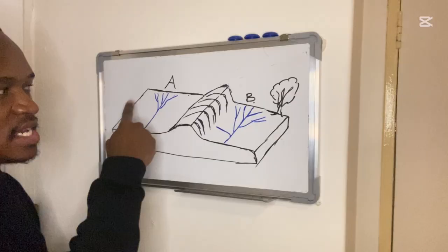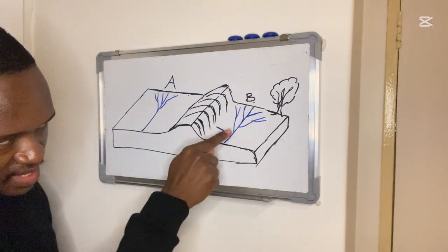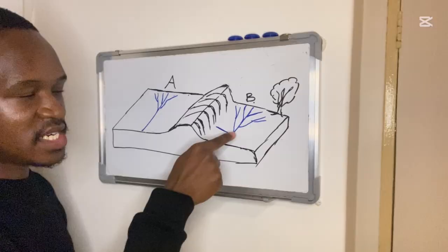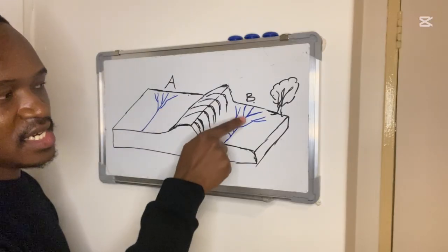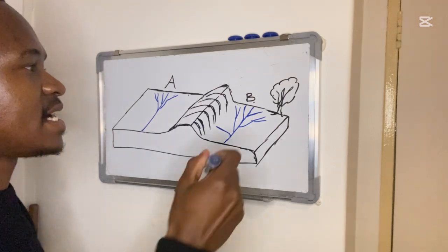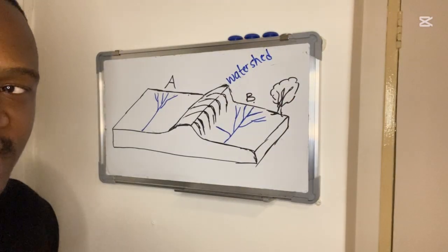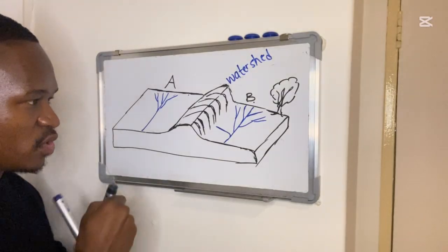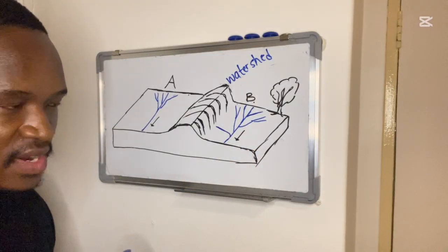Looking at this diagram, drainage basin A is drained by its river and tributaries, and drainage basin B is also drained by its river and tributaries. The high-lying area separating these two drainage basins is the watershed. Rivers A and B are both flowing in the same direction.